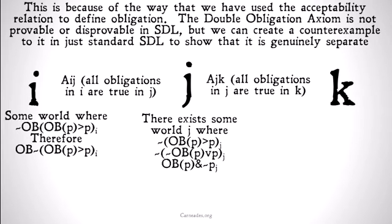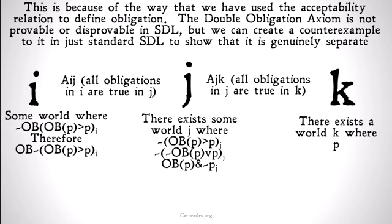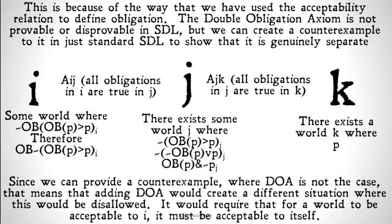That's not a contradiction. Many times, obligations are not fulfilled within a world. Because our relation doesn't say that a world has to be acceptable to itself, it's not going to follow that this provides any kind of contradiction. Finally, in world K, the only obligation we have for world J is 'it's obligatory that P,' so there exists some world K where P is true. Because this seems to be a possible scenario, the double obligation axiom is not going to hold in standard deontic logic. Since we can provide a counterexample where the double obligation axiom is not the case, adding it would create a different situation where this particular set of worlds would not be allowed.